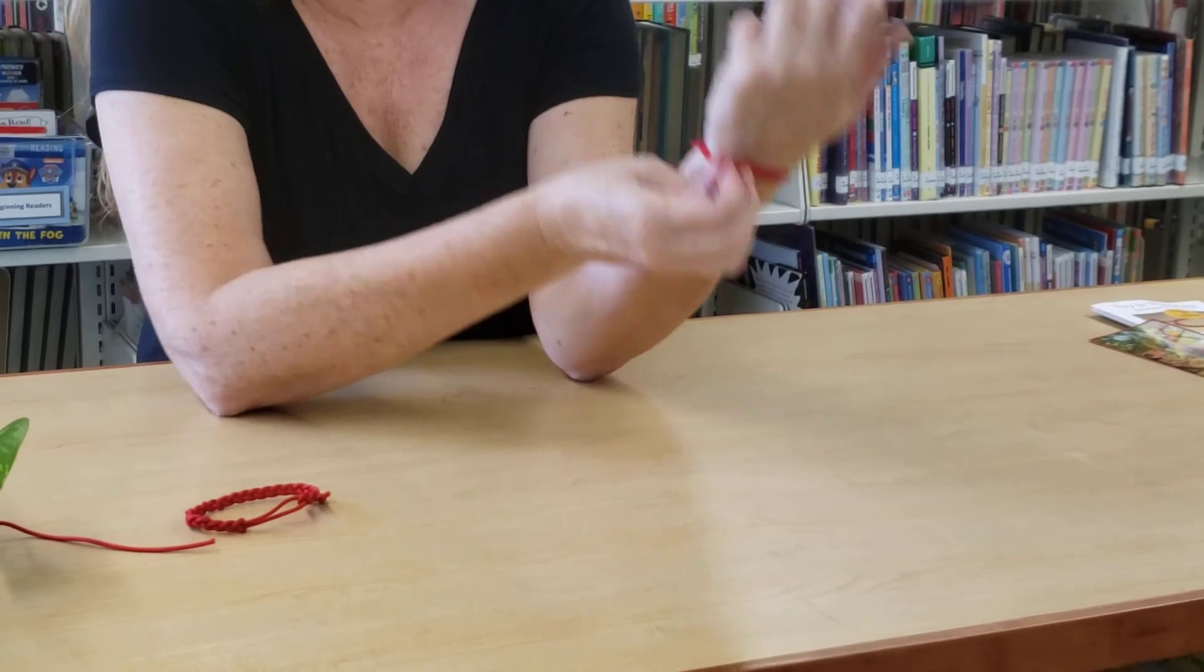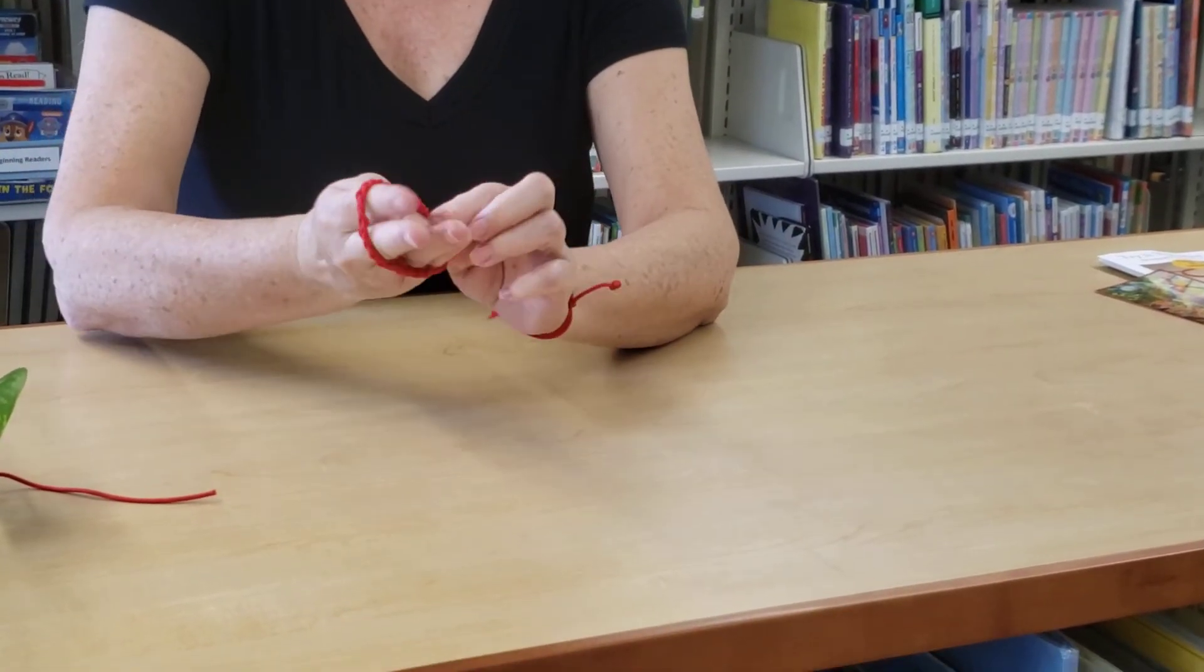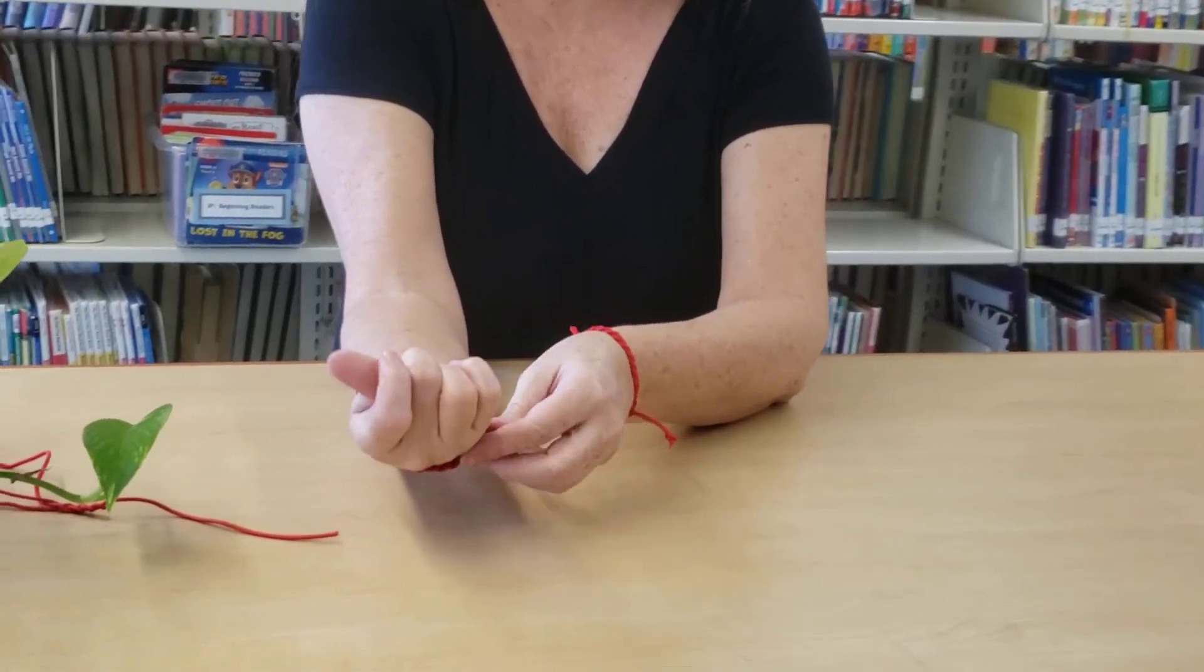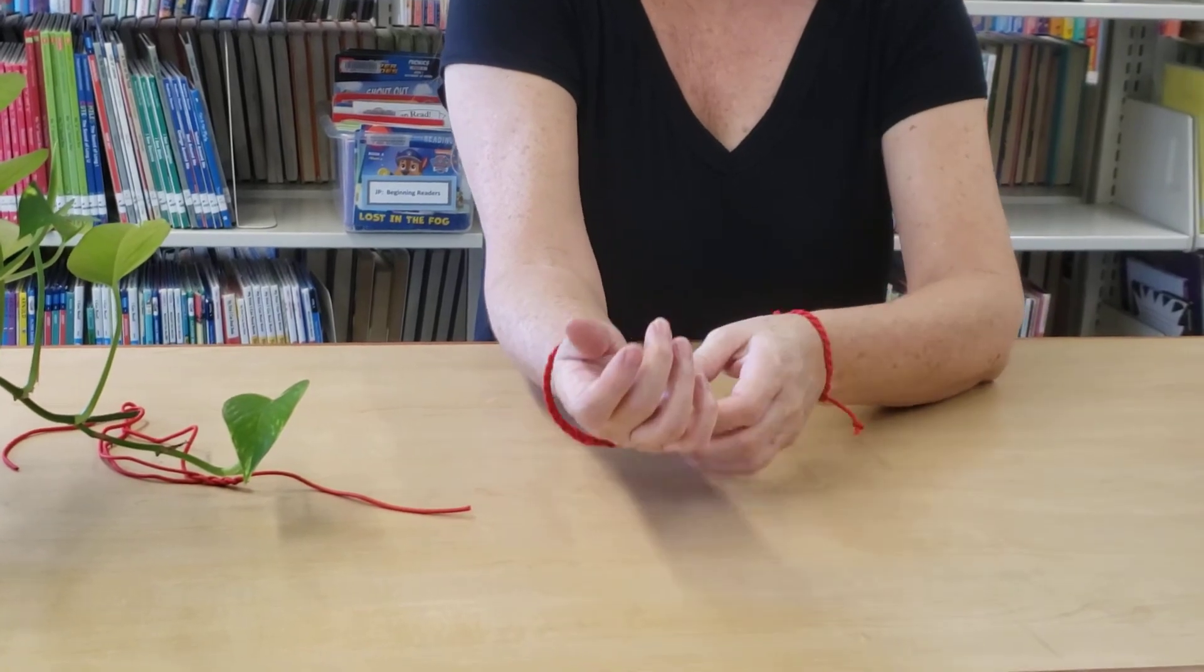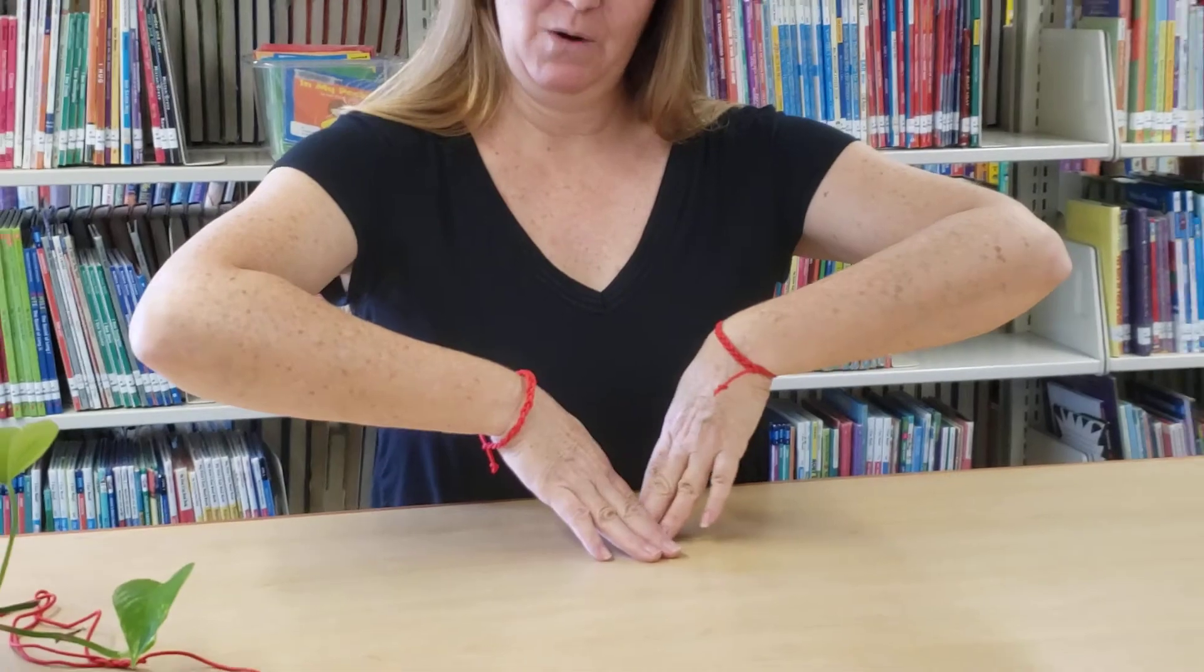And then you can put your bracelet on, and usually this part you'll need a friend to tighten it, but you can go ahead and tighten it. It's the same with this one. This one I made a little longer. And then you just pull the two knots on either end and you tighten your bracelet. And there you have it. Make one for yourself, one for a friend. And thanks for joining us. Hope to see you next week on Try It Tuesday. Aloha.